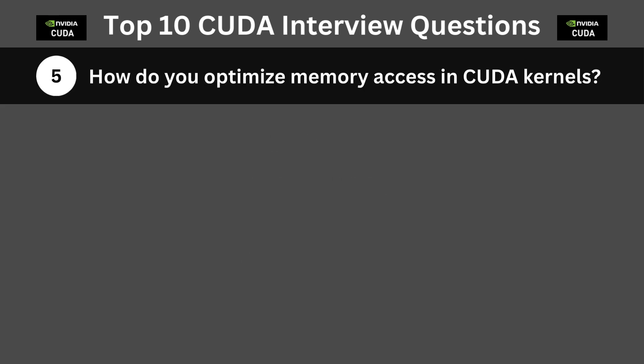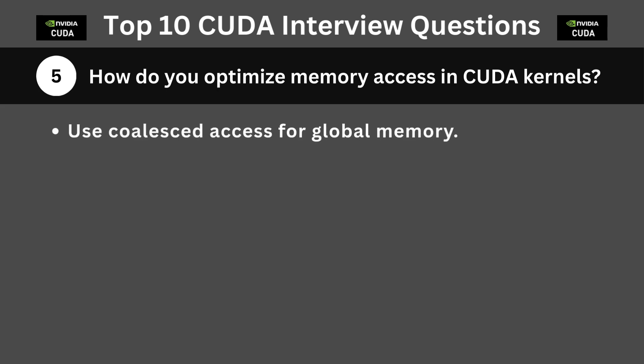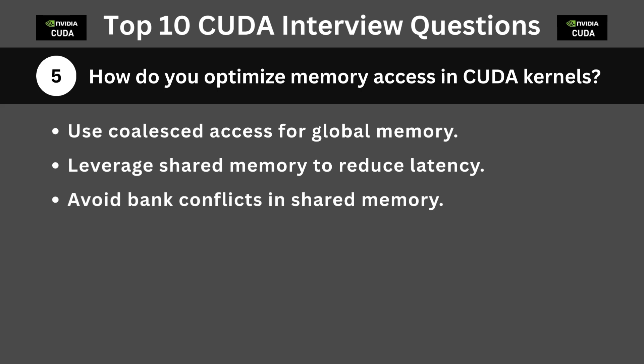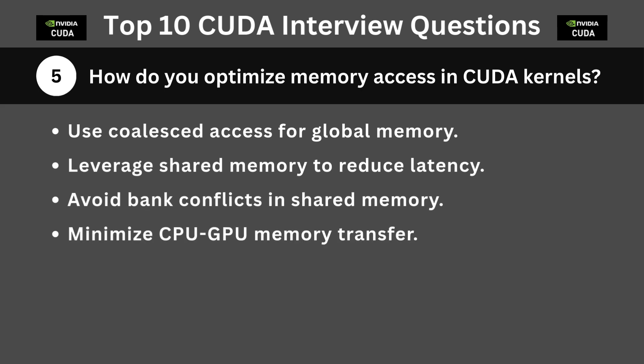The next question is: how do you optimize memory access in CUDA kernels? Key points include using coalesced access for global memory, leveraging shared memory to reduce latency, avoiding bank conflicts in shared memory, and minimizing CPU-GPU memory transfer. Check out our CUDA programming course to learn more — the link is in the description of the video.